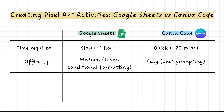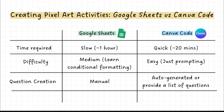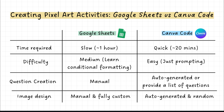For question creation, it's manual in Google Sheets, while Canva Code can auto-generate questions or you can provide a list. Last but not least is image design. In Sheets it's manual but fully customizable — you can have exactly the image you want. The caveat is you have to create it yourself, though in my opinion it's quite fun and therapeutic to make, even if it takes time. With Canva Code the image is automatically generated but it's quite random. It may take a few re-prompts to get close to the image you want.